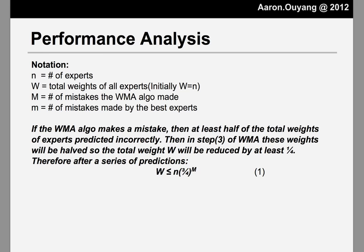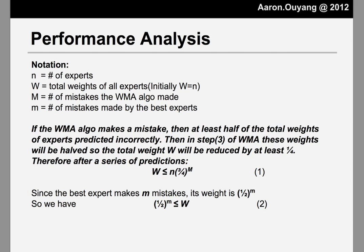Here's what happens. If the weighted majority algorithm makes a mistake, it is the weighted majority that went wrong — in other words, at least half of the weights voted incorrectly. We penalize them by cutting their weight in half, so one-fourth of the total weight is eliminated whenever our algorithm makes a mistake. Therefore, the total weight W in the next round is at most three-fourths of the current W. Since the total weight starts at n and we make M mistakes, the final total weight W is less than or equal to n times (3/4)^M. On the other hand, the best expert makes m mistakes, so its weight is exactly (1/2)^m. Since that weight is part of the total weight, W is greater than or equal to (1/2)^m.